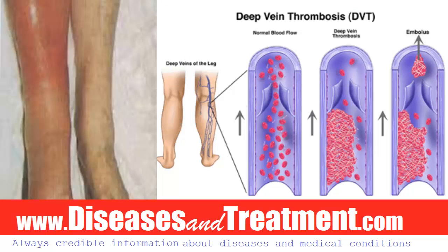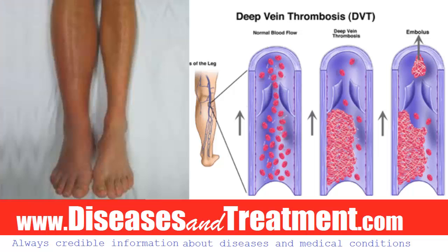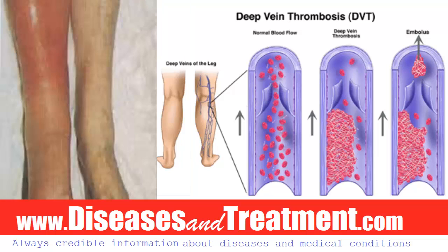A blood clot in the deep veins is a concern because it can cause life-threatening complications. A blood clot, known as a thrombus, in the deep venous system of the leg becomes dangerous if a piece of it breaks off and travels through the bloodstream, through the heart, and into the pulmonary arteries, forming a pulmonary embolism.